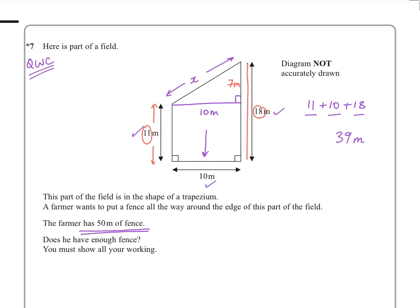So using Pythagoras' theorem we can work out that x squared, the hypotenuse, would be the sum of the smaller squares of the sides. So we'd have x squared is 7 squared plus 10 squared. So that would give us 49 plus 100. So x squared would be 149.